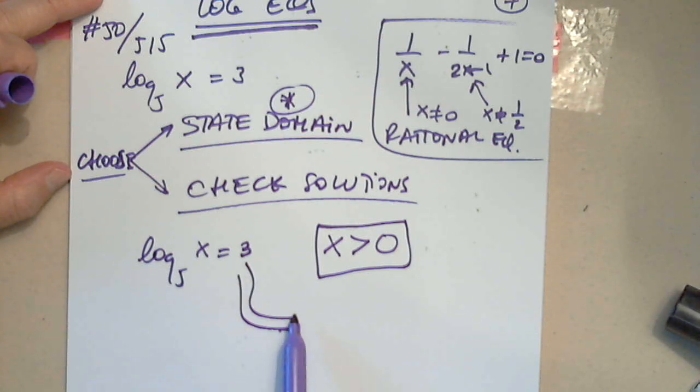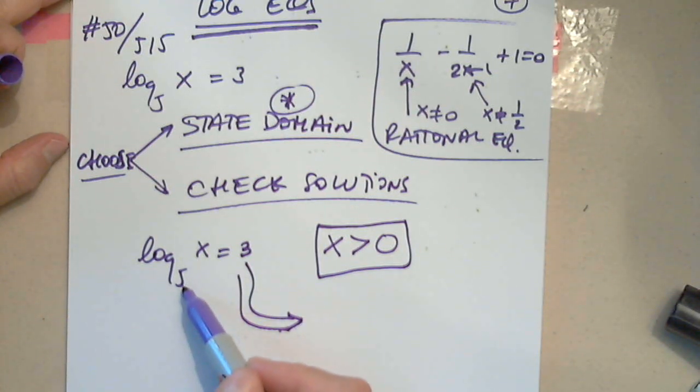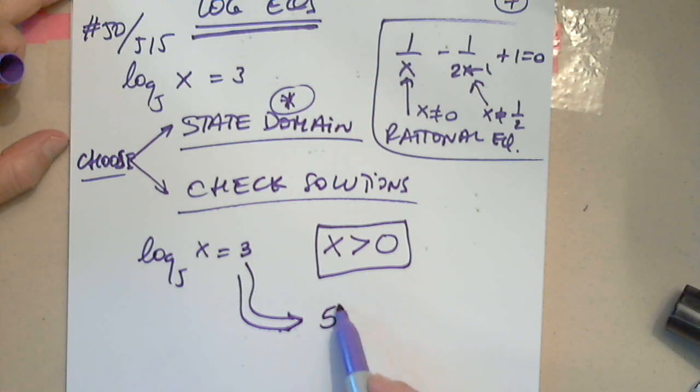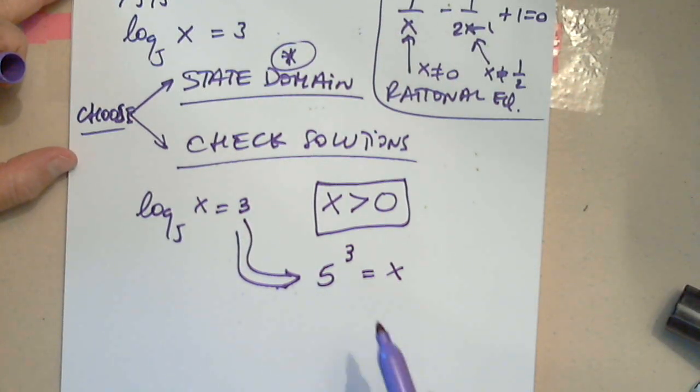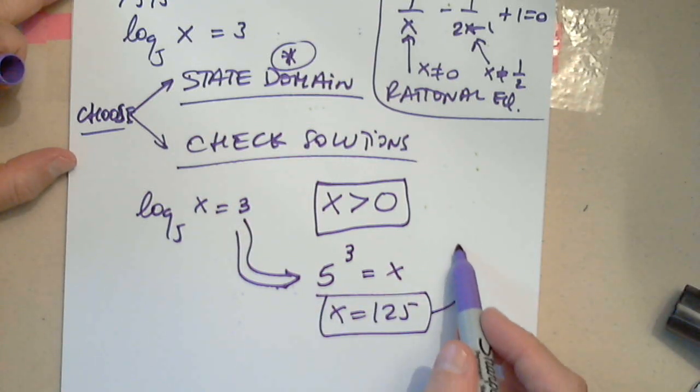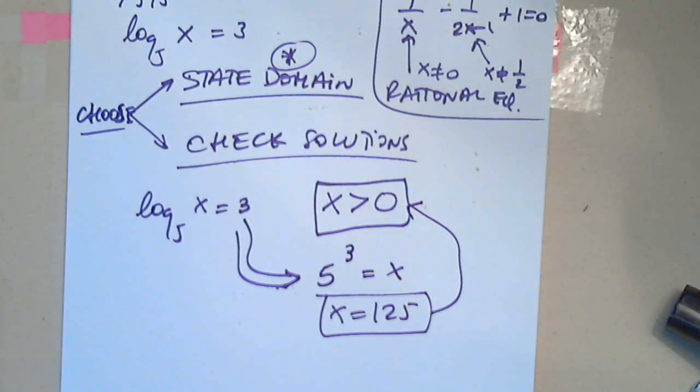And now I know from here that I can change this equation into an exponential equation. Start with the base. Go counterclockwise and raise 5 to the 3rd power equals x. We know that 5 to the 3rd is 125. So x equals 125. It's definitely correct. It's a number greater than 0, and I'll say done.